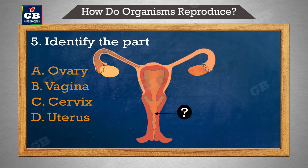Identify the part — is bhaag ko pehchaanen. A. Ovary, B. Vagina, C. Cervix, D. Uterus.